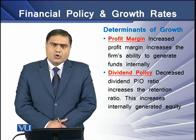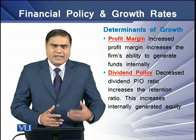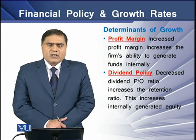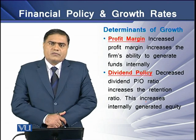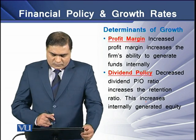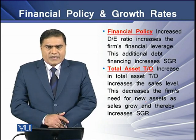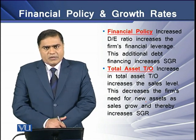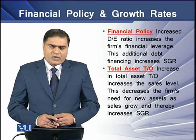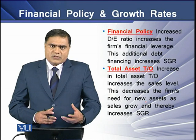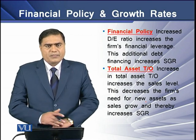There are four important determinants of growth. The first is profit margin — higher profit margin means more retained earnings available to finance growth. The second is dividend policy — if a firm decreases its payout, it has more resources to finance growth in assets. The third is financial policy — if a firm increases its debt-equity ratio, it has enough resources to finance projected growth. The fourth is total assets turnover ratio, which shows the firm's efficiency in asset usage. Higher asset turnover means more resources available to finance projected growth.